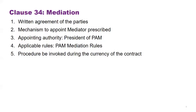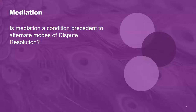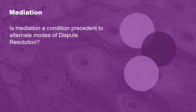Quickly moving through the various dispute resolution methods: the first is Clause 34 mediation. This is not a new clause — it was also in PAM 2006 in Clause 35 and is substantially similar. Key points to note: you must have a written agreement to mediate; the appointing authority would be the president of Pertubuhan Arkitek Malaysia; parties can mutually agree within a set time frame, and if they fail to agree, you go to the president of PAM. Mediation can be invoked during the currency of the contract. The answer to whether it is a condition precedent is found in Clause 34.1, which uses the word 'may' — giving you an option, not an obligation. PAM goes one step further and expressly states that mediation is not a condition precedent to adjudication or arbitration.